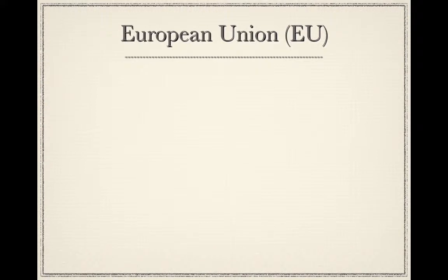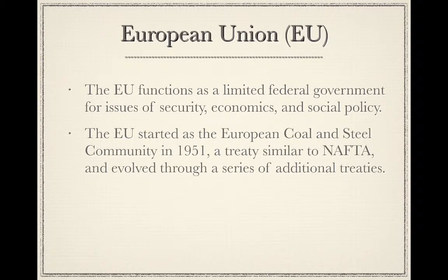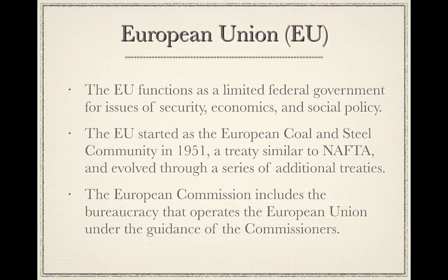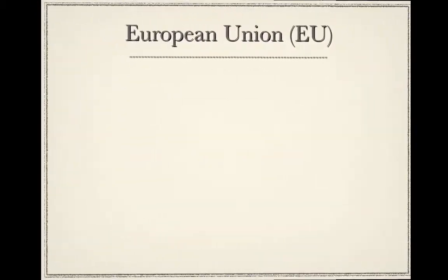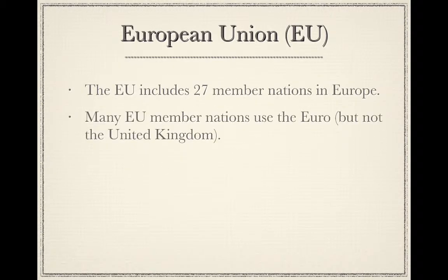The European Union functions as a limited federal government for issues of security, economics, and social policy. The EU started as the European Coal and Steel Community in 1951 — a treaty similar to NAFTA — and evolved through a series of additional treaties. Some people wonder if NAFTA might one day lead to a North American Union including the United States, Canada, and Mexico. The European Commission includes the bureaucracy that operates the EU under the guidance of commissioners. The EU includes 27 member nations in Europe, and many EU member nations use the Euro, although the United Kingdom kept the British pound.